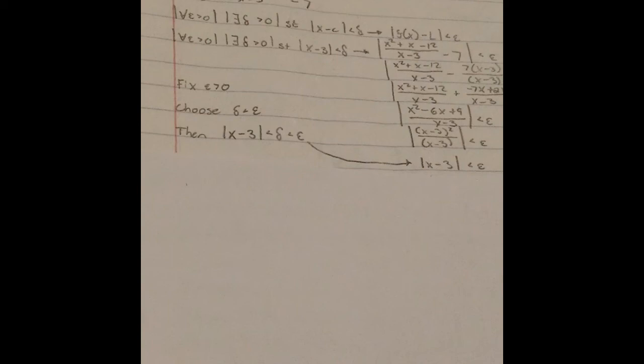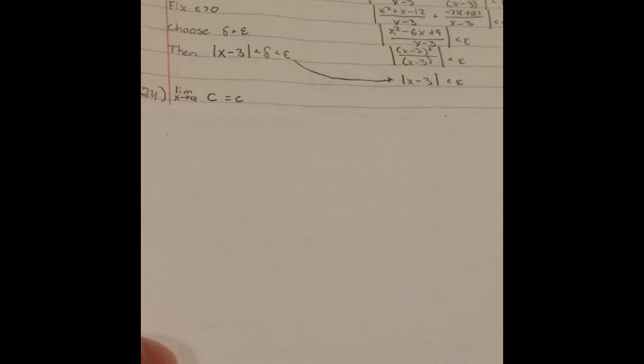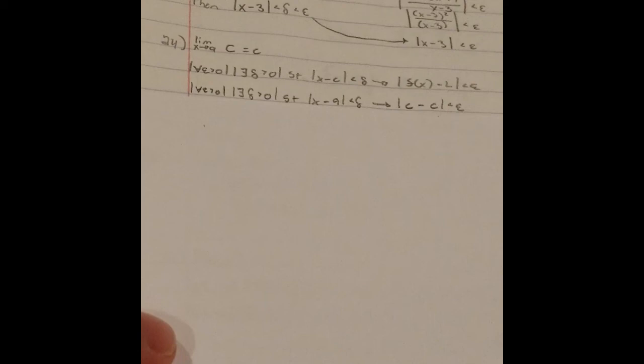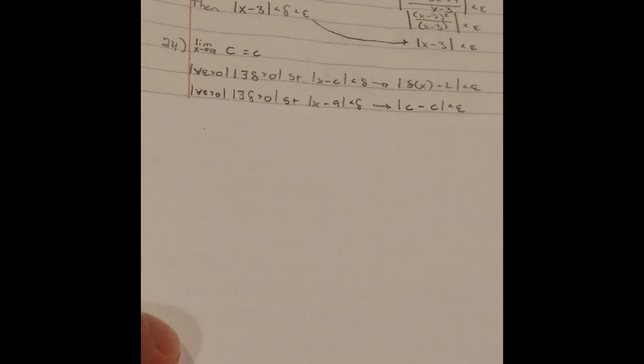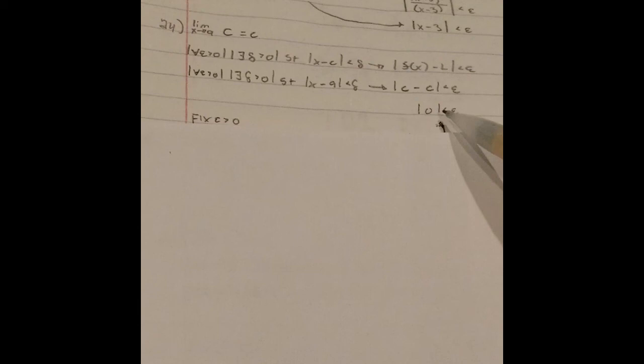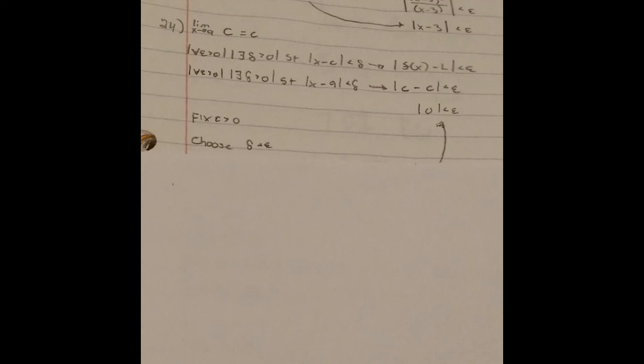Question 24: the limit of x as it approaches a for a constant c always equals c. For a constant function — just a horizontal line — the proof is straightforward. First step is the same: for all epsilon greater than 0, there exists a delta greater than 0, such that x minus c less than delta implies f(x) minus L less than epsilon. When we plug in, f(x) minus L is just c minus c, which equals 0, which is always less than any epsilon greater than 0.